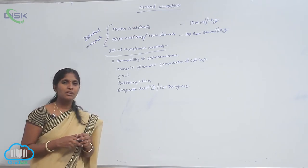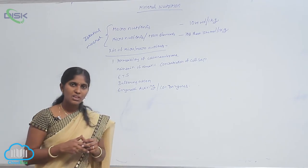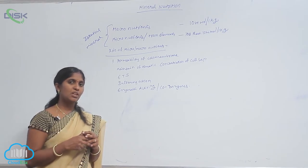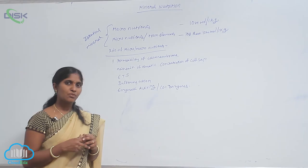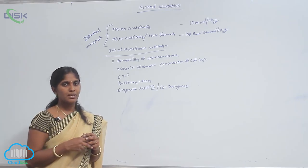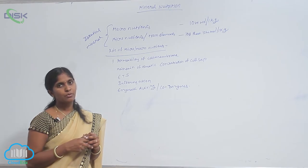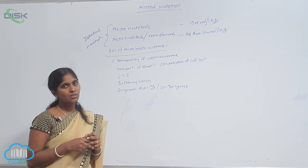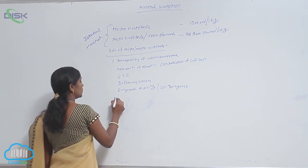Macro as well as micro elements are found in various forms and they show various functions in plants. What are the forms available of essential nutrients and what are the functions? First, we'll take nitrogen.